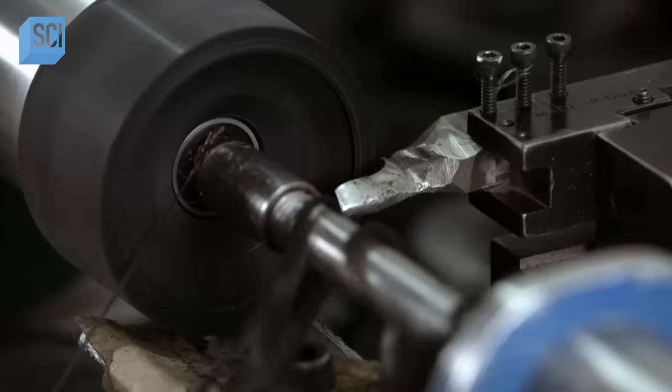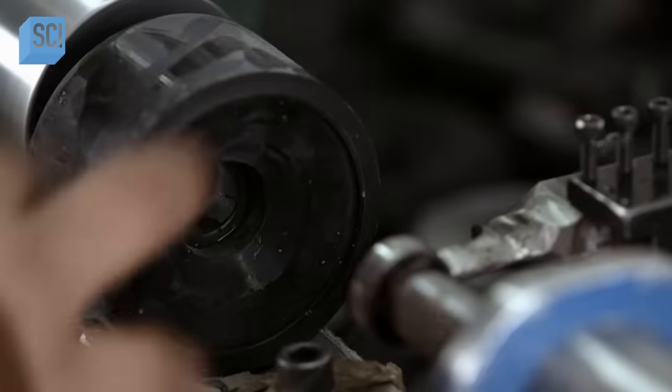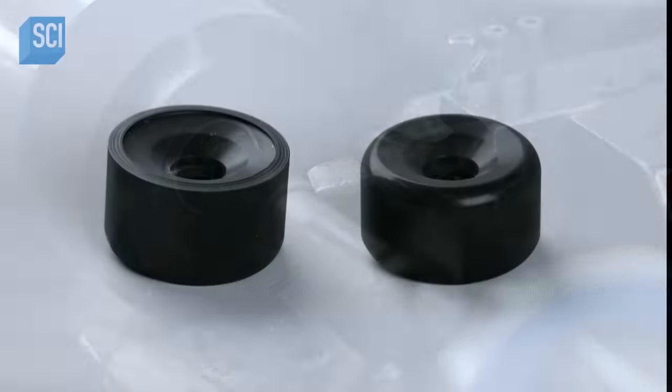The lathe spins the wheel, while an automatic cutter contours the edges to a softer, more rounded profile.